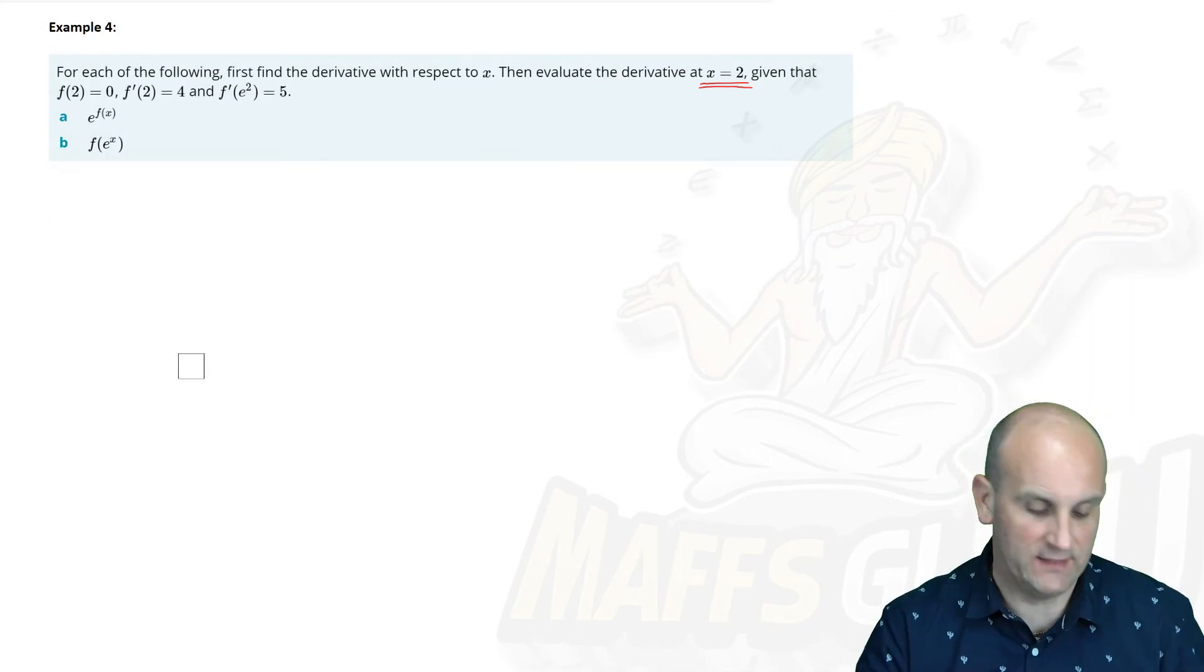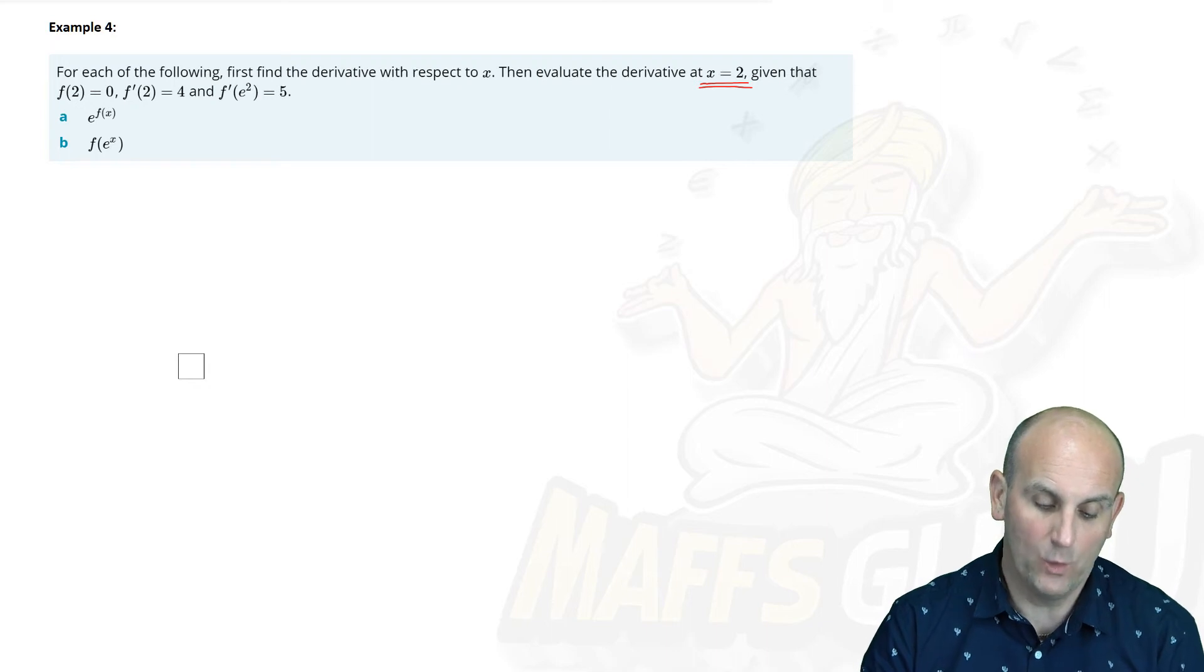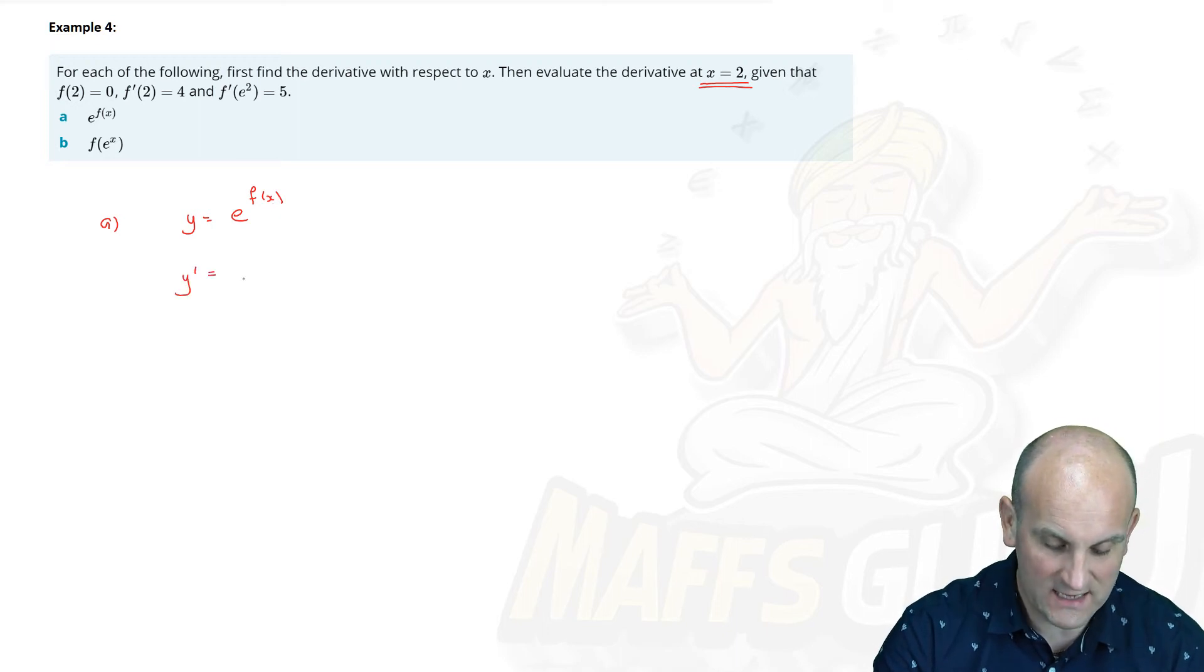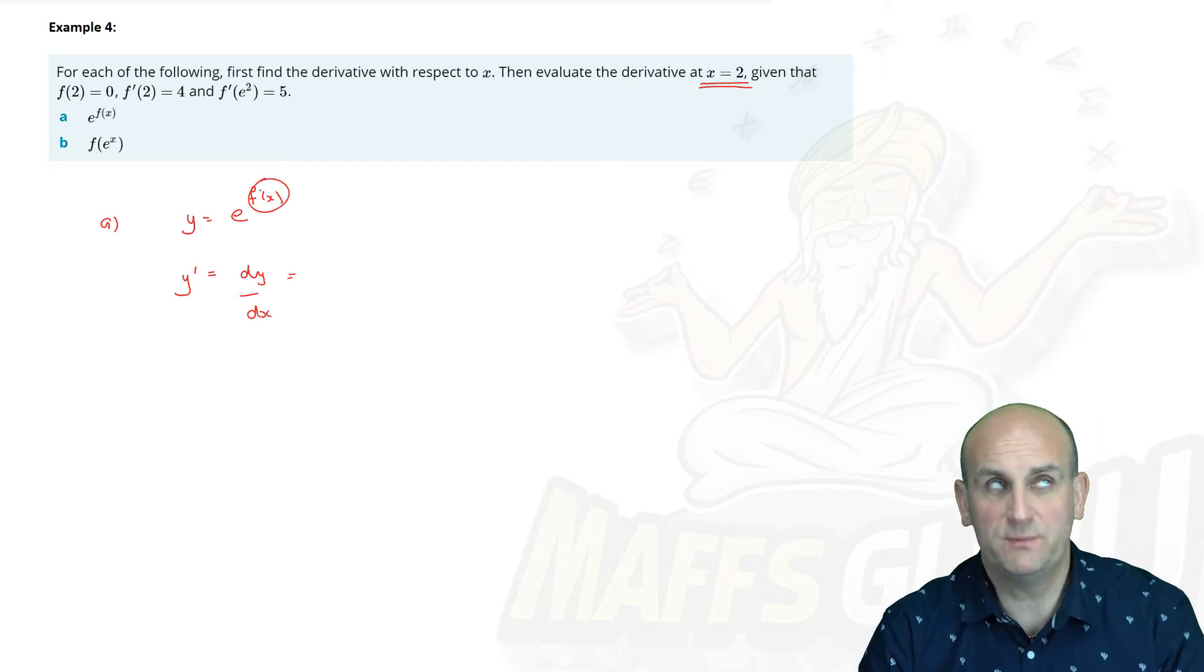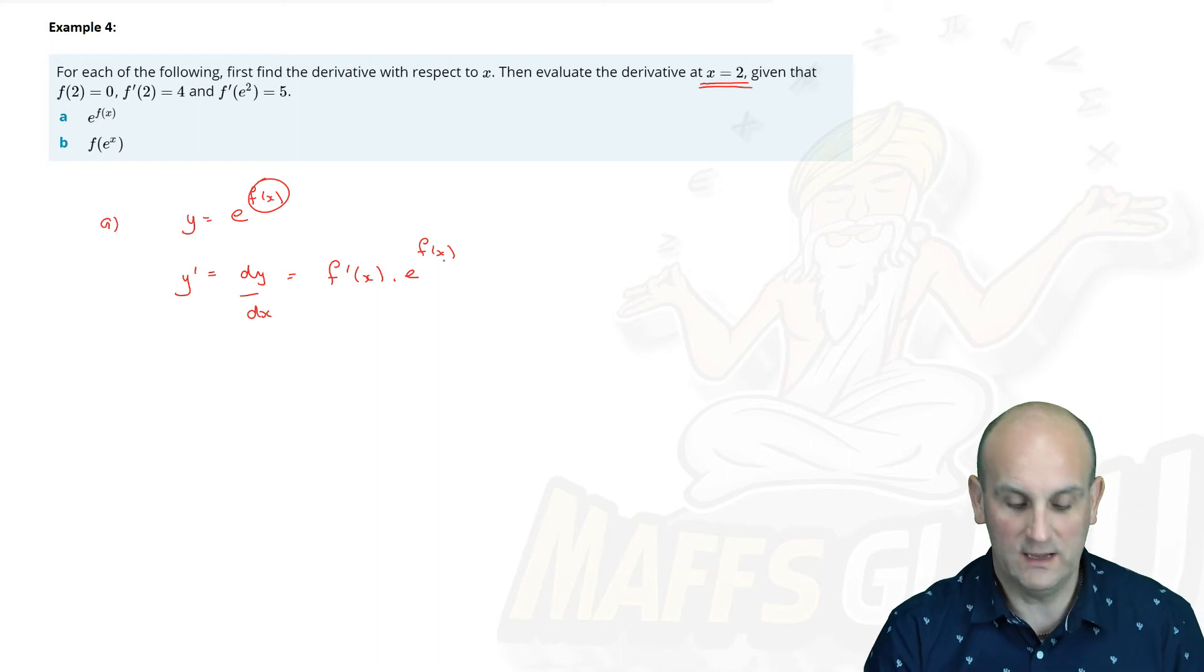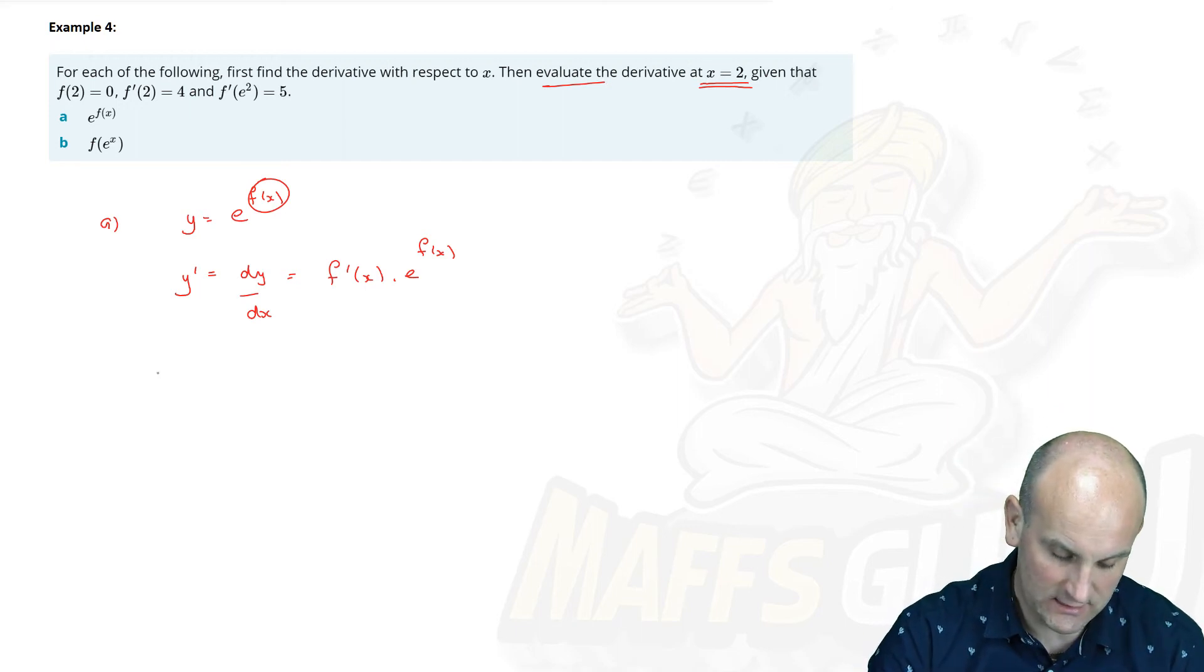OK, so this looks complicated, but more it's about the language. For each of the following, first find the derivative with respect to x, and then evaluate the derivative at x equals 2. OK, given that, we've got certain conditions. Right, so part A. We've got that y is equal to e^(f(x)). OK? So we can now differentiate this and we know that y', which is also the same as dy/dx, is equal to... Well, that is my power, and I multiply by the differential of that power. So f'(x) multiplied by e^(f(x)). Well, it wants to know the actual value, alright? So evaluate means, says find the value when x is equal to 2. So we now know that x is equal to 2.